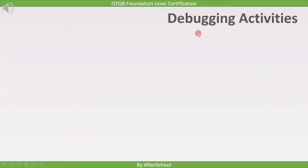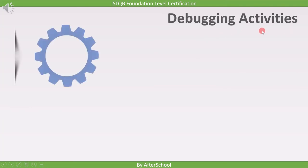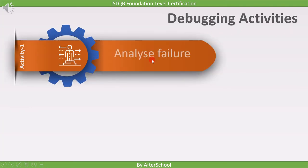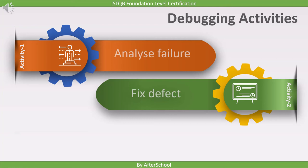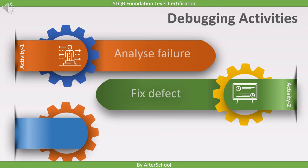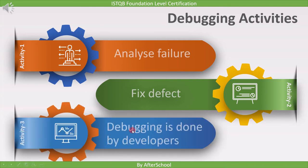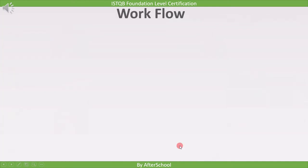Now let's have a look into the debugging activities. The most important activity of debugging is to analyze failure. Once the defect is analyzed and root cause is found, the next activity is to fix the defect. And the last point is debugging is done by developers.